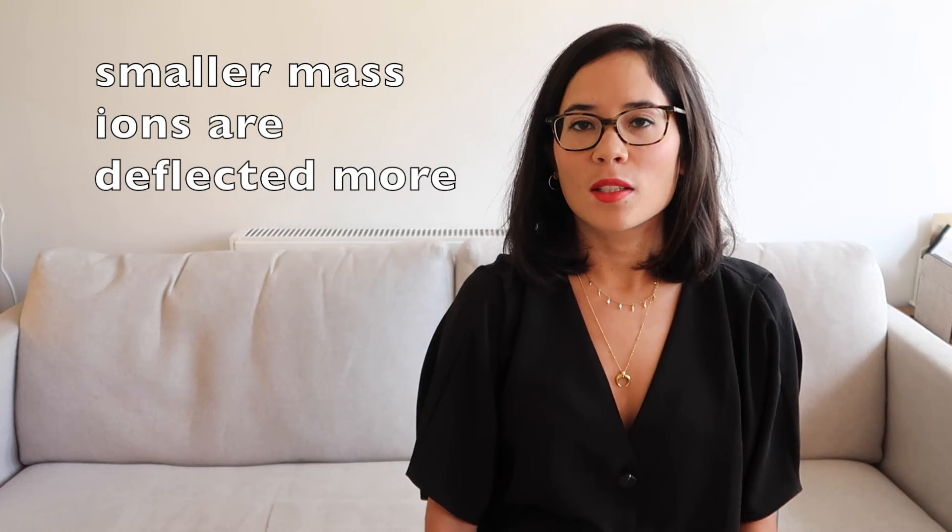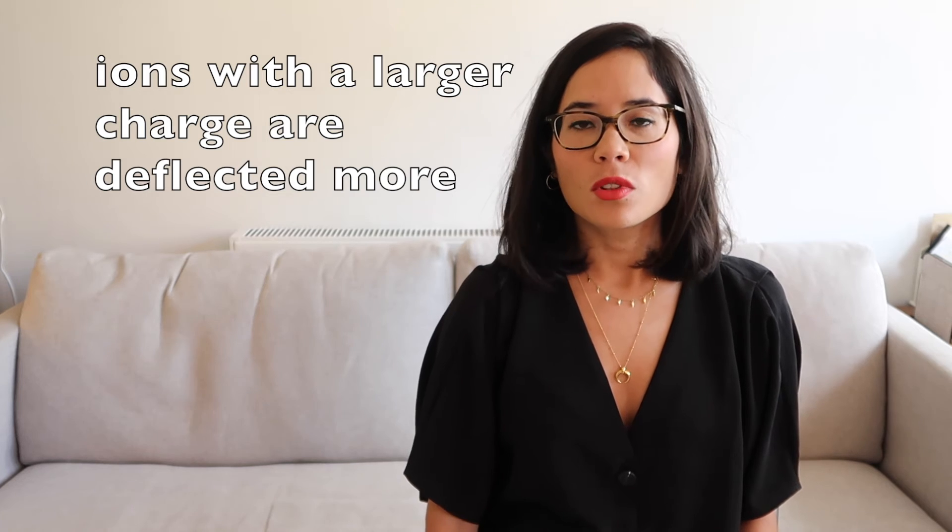So smaller mass ions will be deflected more than larger mass ions, and ions with a larger charge will be deflected more than ions with a smaller charge. So for example, something that has a mass of 56 but has a charge of 2+, its mass to charge ratio will be 28. If we take a separate sample and the atoms have a mass of 28 but this time their charge is 1+, they will also have a mass to charge ratio of 28. So make sure you work out that ratio so you can work out the amount of deflection that will take place. And obviously remember that ions with larger charges are formed by electrons knocking out more than one electron. So a 2+ ion is formed by two electrons being knocked out of the atom. A 3+ ion is formed by three electrons being knocked out of the atom.